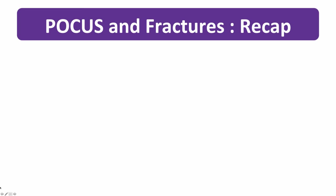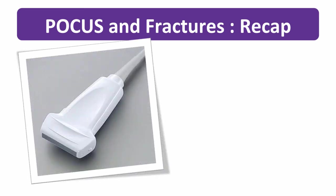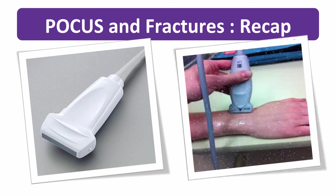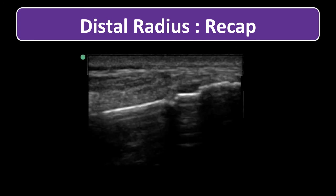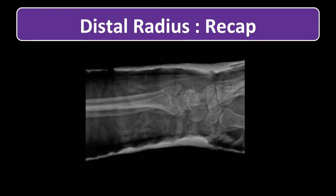So let's recap. We're going to start with a linear array transducer in a longitudinal orientation. Next, we're going to look for the bright white echogenic line that is bone and for the disruption in that smooth line that indicates a fracture. You're going to reduce the fracture as you ordinarily would and use the ultrasound to confirm the proximal and distal bone is in alignment. Then you cast the patient and send them for their post-reduction x-rays to confirm your excellent reduction.